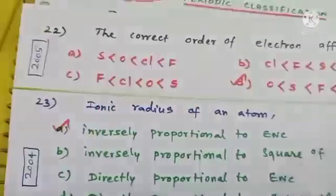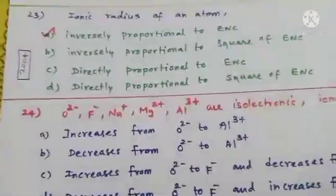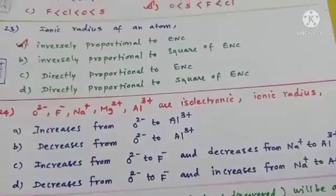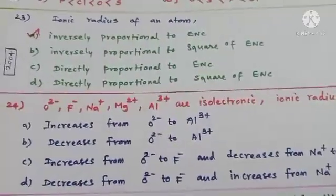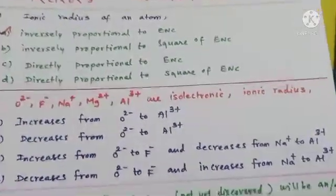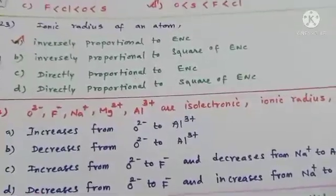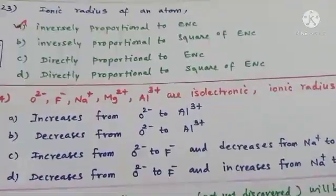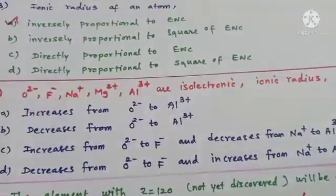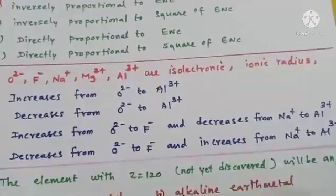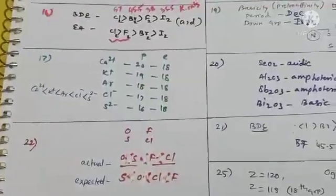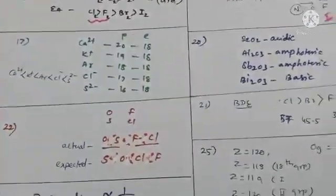Question 24: you are given isoelectronic species O²⁻, F⁻, Na⁺, Mg²⁺, and Al³⁺ — all having 10 electrons each. The question asks about the nature of ionic radius: does it increase or decrease from O²⁻ to Al³⁺? This can be answered based on the attraction between protons and electrons.